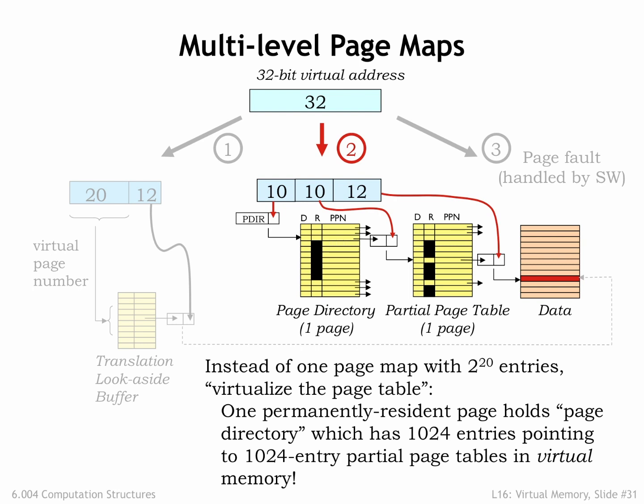The resultant savings really add up when there are many applications, each with their own context. In this example, note that the middle entries in the page directory — the entries corresponding to the as-yet unallocated virtual memory between the stack and heap — are all marked as not-resident. So no page map resources need to be devoted to holding a zillion page map entries all marked not-resident. Accessing the page map now requires two accesses to main memory: first to the page directory, then to the appropriate segment of the page map, but the TLB makes the impact of that additional access negligible.